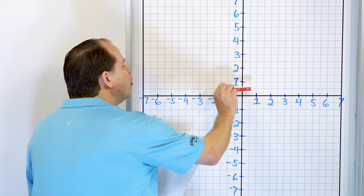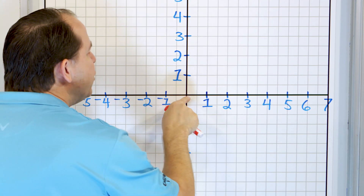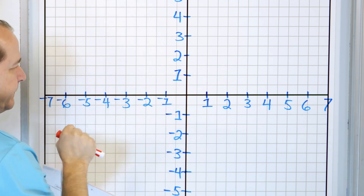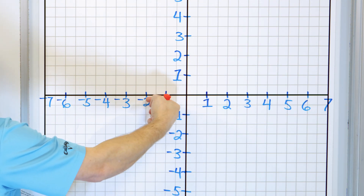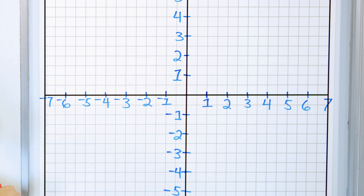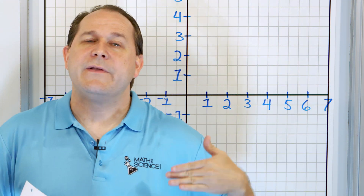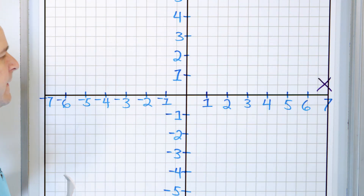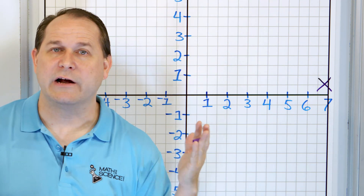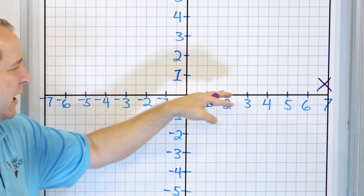I want you to ignore all of these numbers for now. The number line — just picture it as this horizontal black line. You have zero in the middle, and then 1, 2, 3, 4, 5, 6, 7, and it goes on forever in the positive direction. The negative numbers go negative 1, negative 2, negative 3, on to negative infinity. So this horizontal black line is a number line. We're going to give it a special name: the x-axis. We need to call it something because we have another number line running up and down. Axis just means number line — it's the x number line.